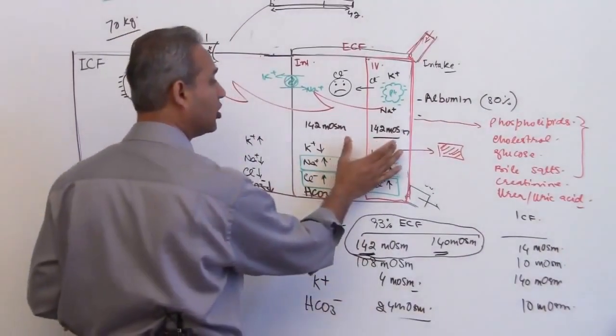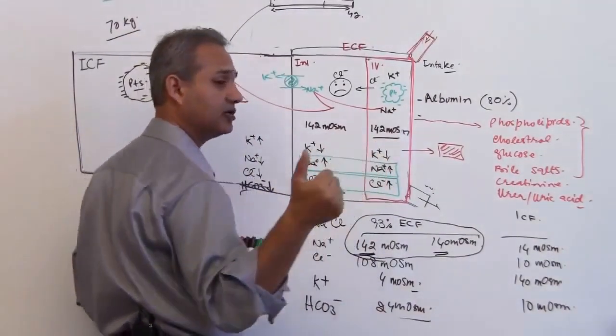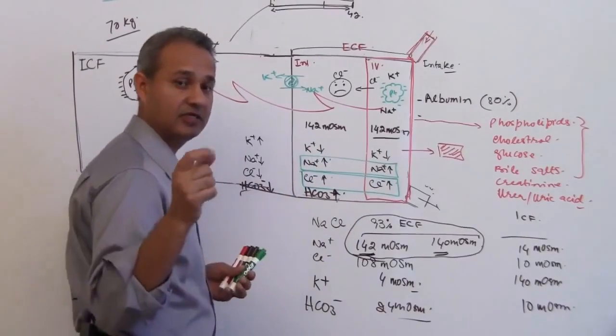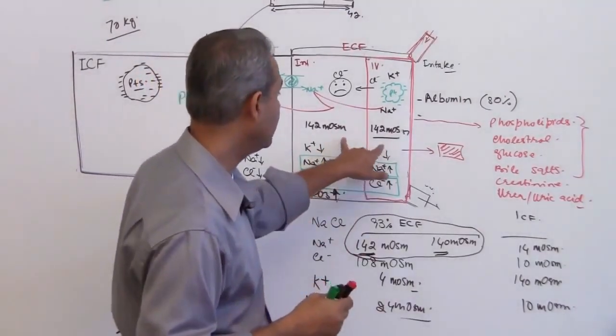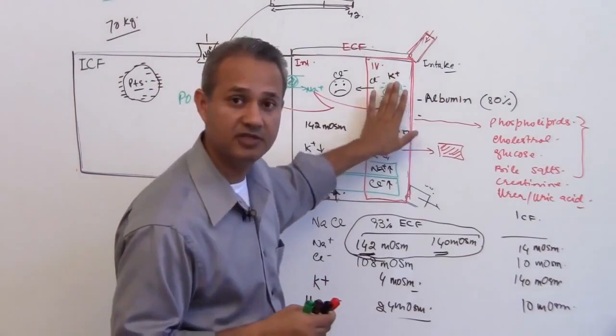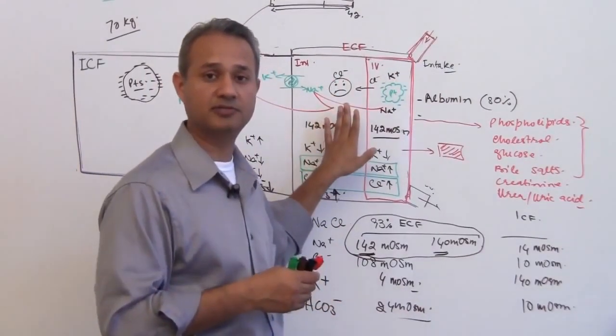The oncotic pressure and the hydrostatic pressure are the factors which define how much fluid would stay in the vessel and how much would go out in the interstitium.